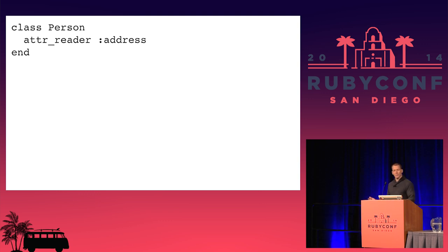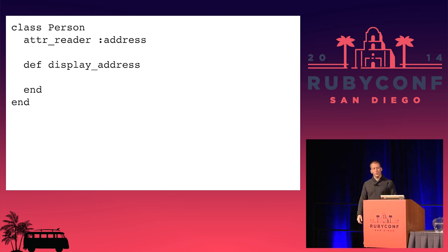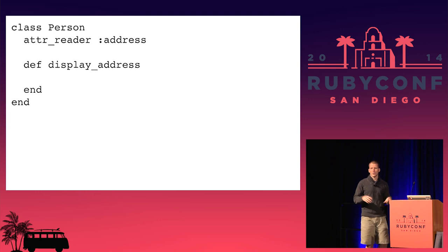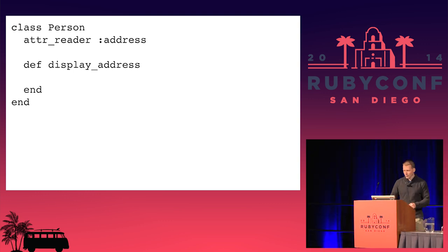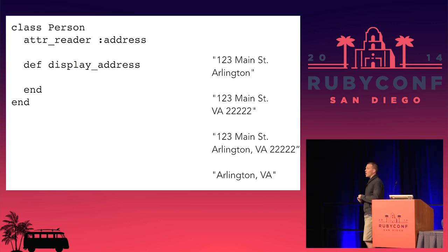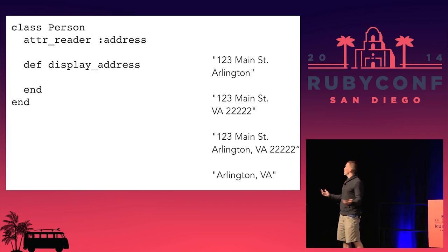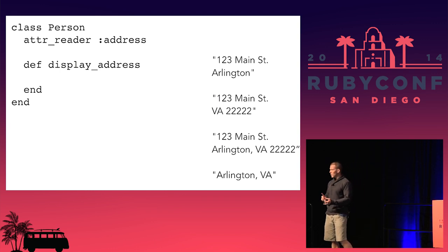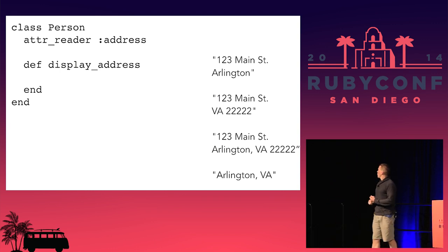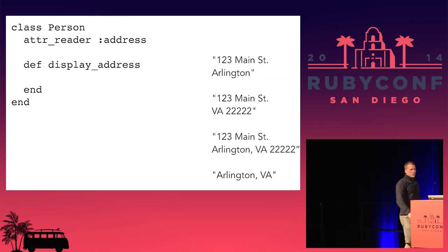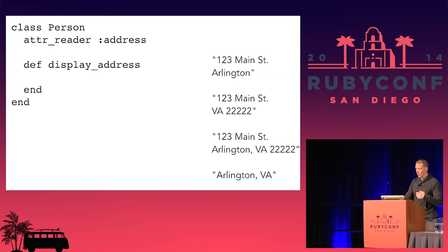So let's start looking at some code. Here we have a class Person that has an address, and we want to display it. I know I've done stuff like this in ActiveRecord when I was first learning Rails — you just put code in your ActiveRecord object and it displays properly in the view. Depending on what data we have, we'll display it in a certain way. We need a carriage return if we've got a street and a city, or a province and postal code, and we don't want a comma if there's no city.